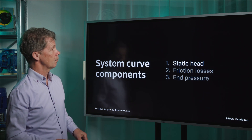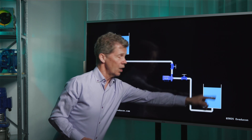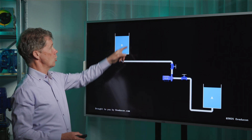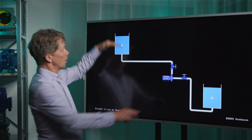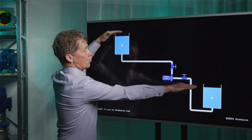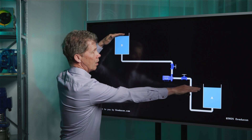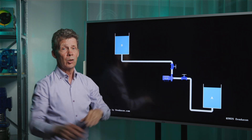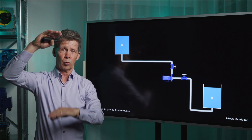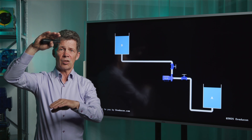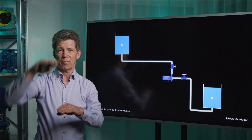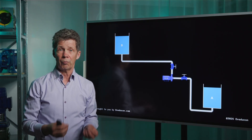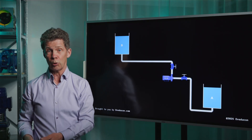Let's start with your static head. We have a suction tank A here and a discharge tank B here. The medium level differs — we have to move the medium from tank A to tank B, and you have to overcome a certain vertical distance or length. This distance or length is called your static head. If you want to know how to determine your static head in a number of different situations, we made a special video about it and you can find it on our YouTube channel. We put a link to this video below.